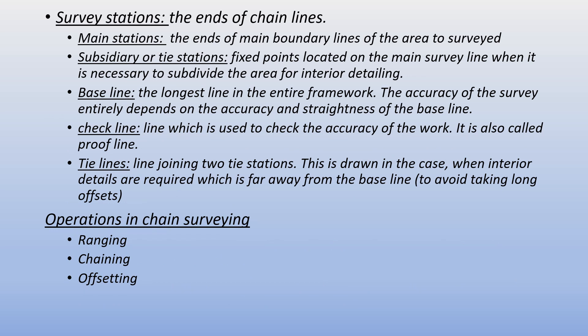Survey stations are the end points of chain lines. There are two types: main stations and subsidiary stations. Main stations are the ends of main boundary lines of the area to be surveyed. Subsidiary or tie stations are fixed points located on the main survey line when it is necessary to subdivide the area for interior detailing.